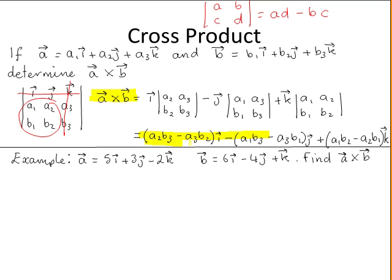Setting up the matrix means you don't have to learn this formula off by heart. Here we have an example: vector A and vector B are given, and we need to find the cross product A cross B.